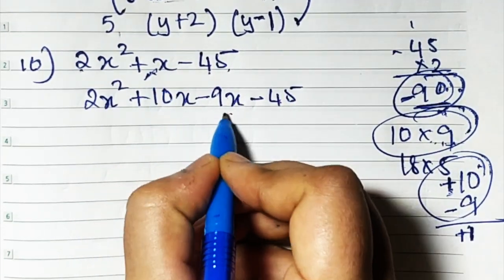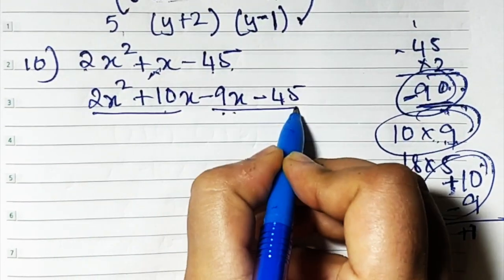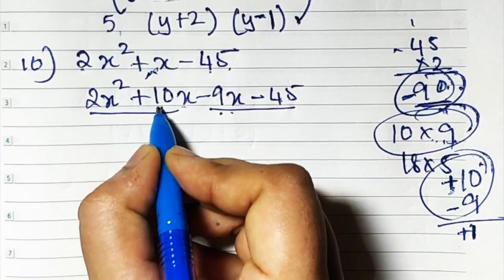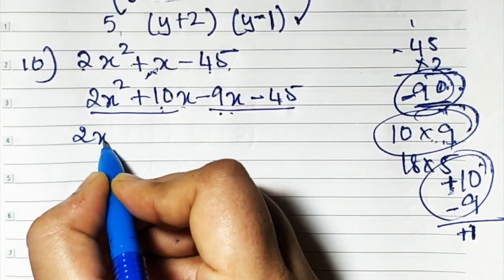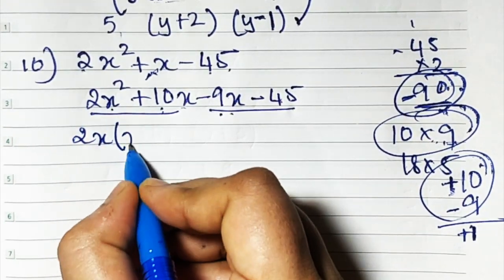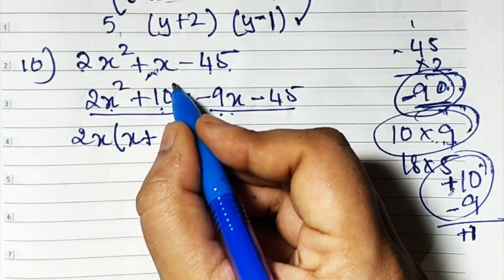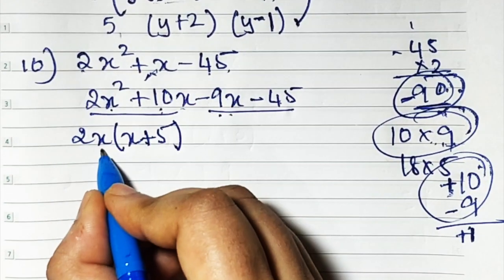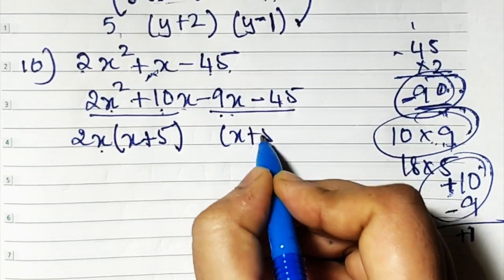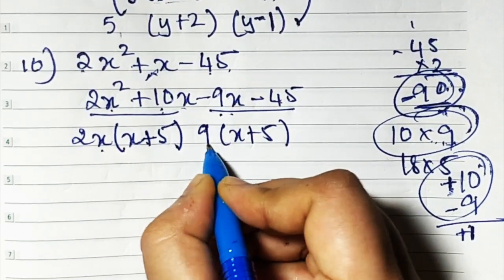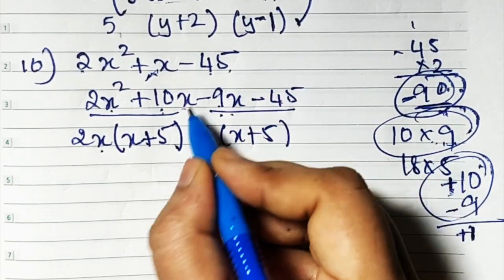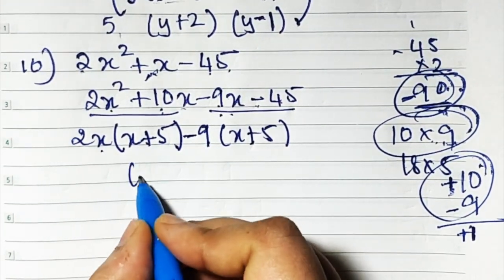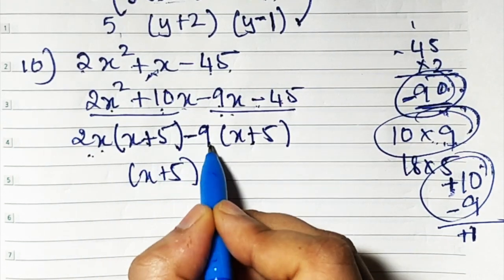So: 2x squared plus 10x minus 9x minus 45. The middle term I have written as plus 10x and minus 9x. Now take two terms in a group. What is common here? 2 is common and x is also common. What remains inside? 2x has gone out so only 1x remains inside, plus 5 — 2 has already gone out so 5 remains inside. Now here also I need x plus 5. What is common? 9, because 9 fives are 45. So 9 I've taken but this is plus and this is minus — I'm taking minus out. So one bracket will be x plus 5 and the other bracket is going to be 2x minus 9.